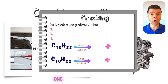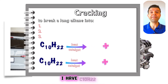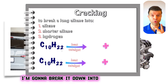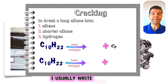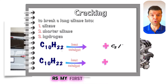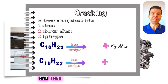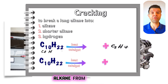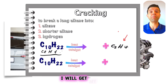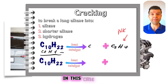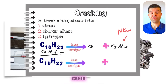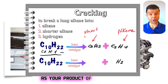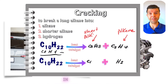Let's practice a cracking reaction. I have C10H22, which is a long alkane, and I'm going to break it down into two products. I write C2H4 as my first product, which is an alkene. Then I subtract C2H4 from the original C10H22, and I get my other product, the alkane C8H18. It's also possible to get hydrogen as a product of cracking.